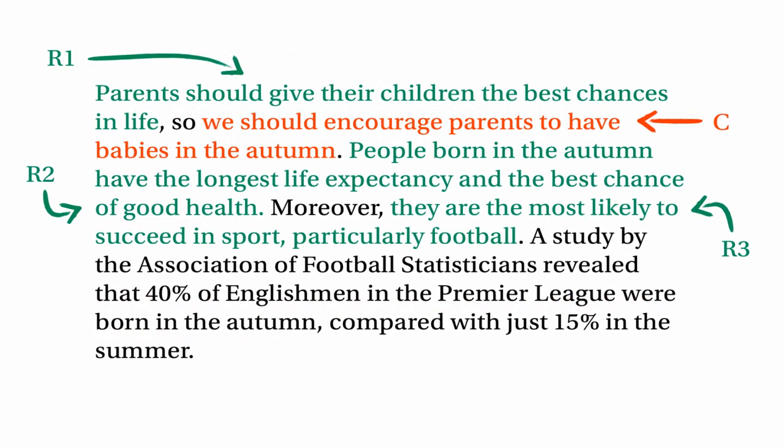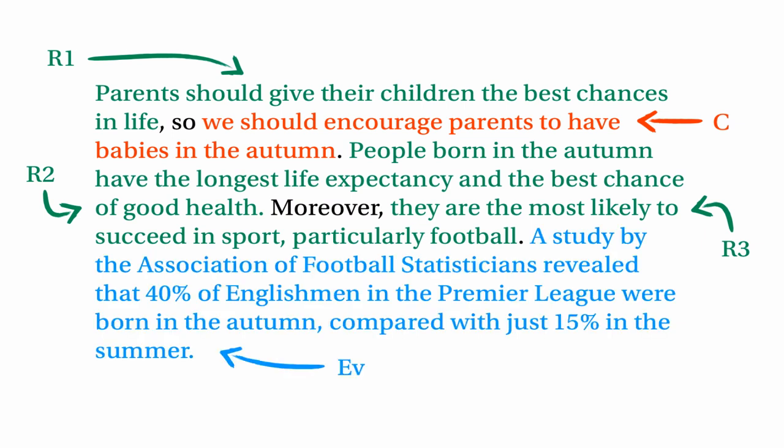Going back to the argument, the bottom part is a piece of evidence. The Association of Football Statisticians went away and did some research and came up with a fact: 40% of Englishmen in the Premier League are born in the autumn compared with just 15% in the summer. That's a fact. You could dispute whether the statisticians had done their calculation incorrectly, but on the whole it's not something that's open to debate — it's just something that's hopefully true. It's not really a question of opinion, unlike the things labelled as reasons. This is a basic given fact, and tellingly it involves statistics — evidence often involves statistics, the outcome of some research.